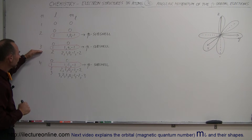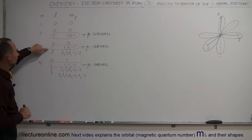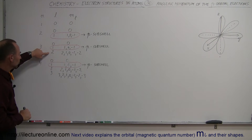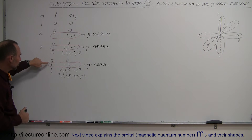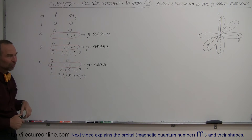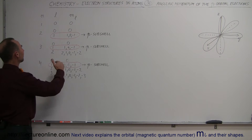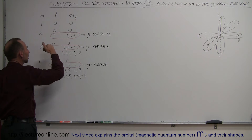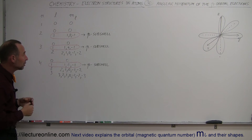In the third level, we find that there are 3 sub-shells: the s-sub-shell, the p-sub-shell, and the d-sub-shell. And in the fourth energy level, we have the s-sub-shell, the p-sub-shell, the d-sub-shell, and the f-sub-shell — we'll get into those later. But now let's concentrate on the p-sub-shell. Besides level number one, in every subsequent level you will find a set of 3 p-orbitals.